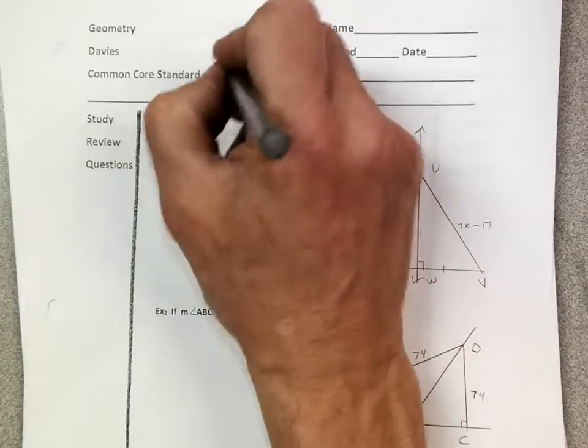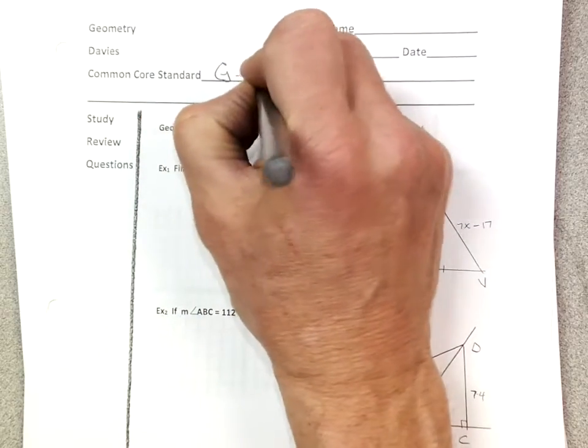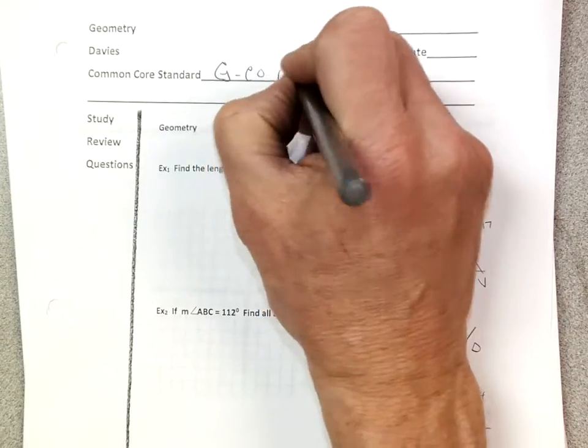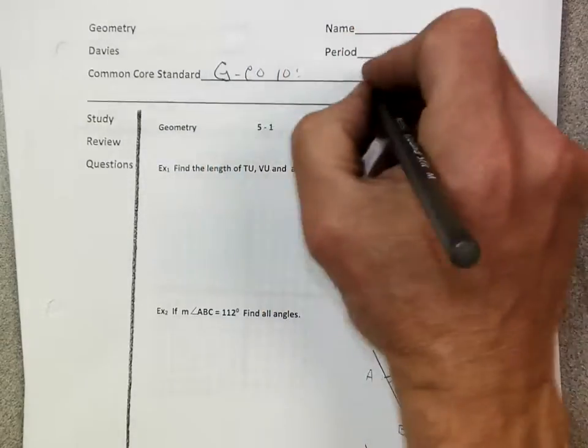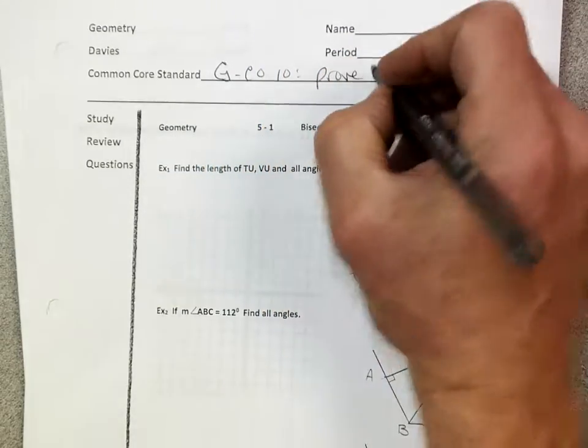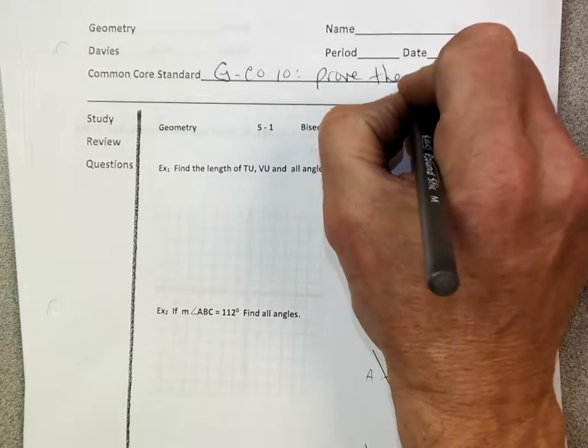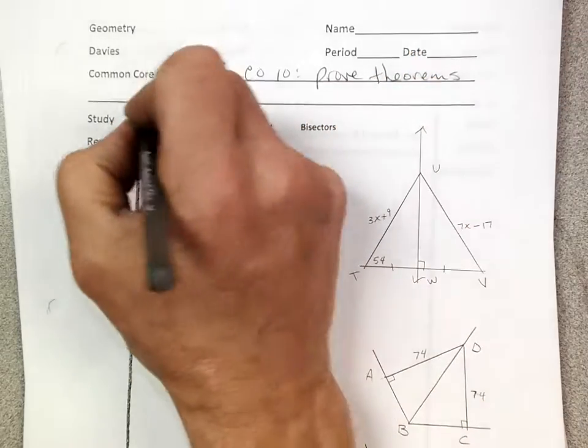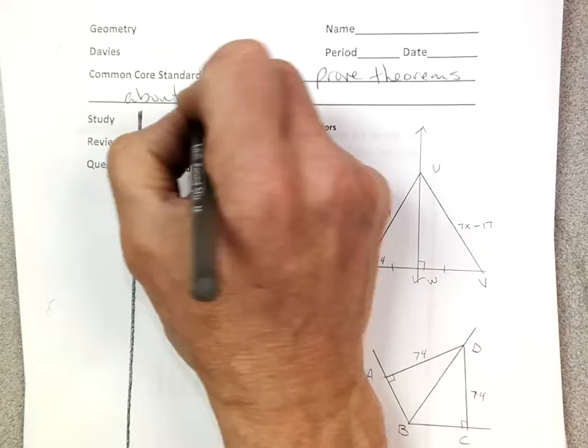So today, common core, same thing. G for geometry, CO for congruence, and it is number 10, which is what we've been doing, prove theorems about triangles.